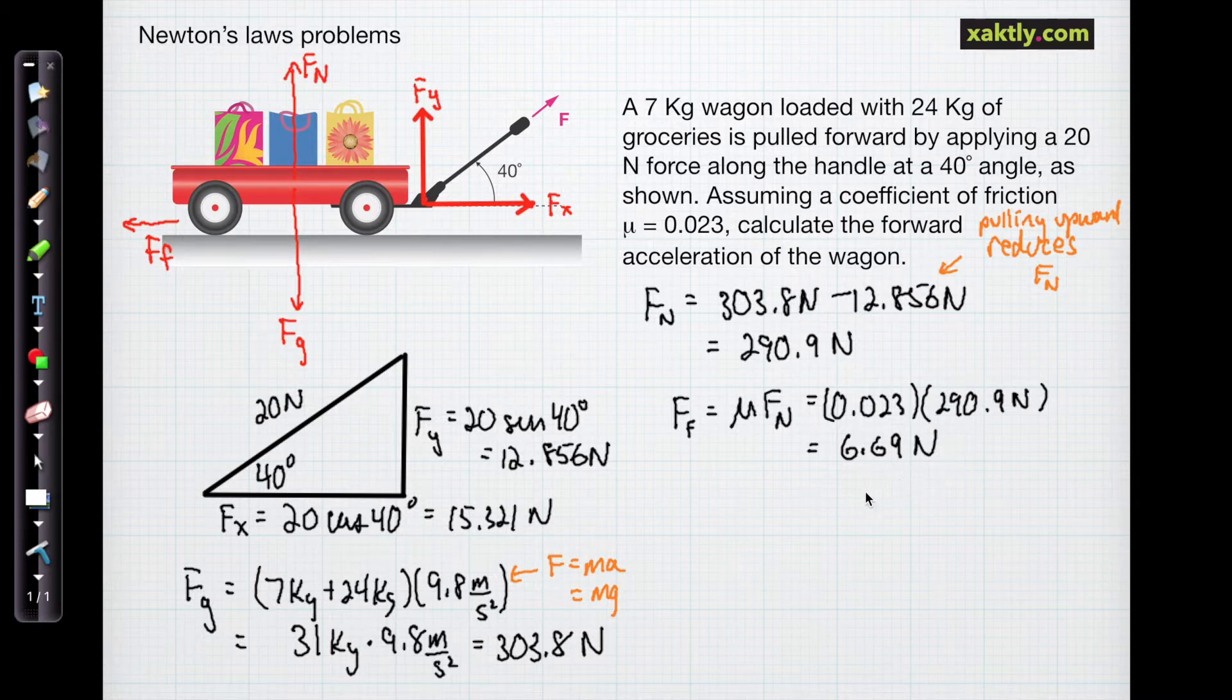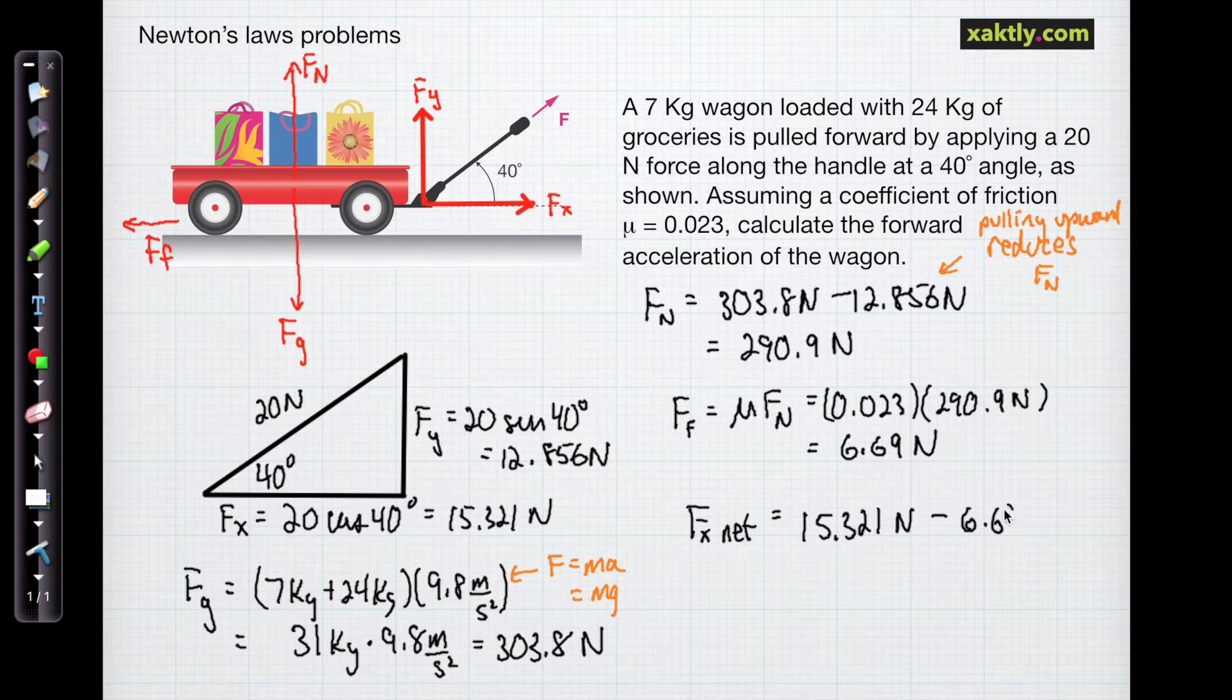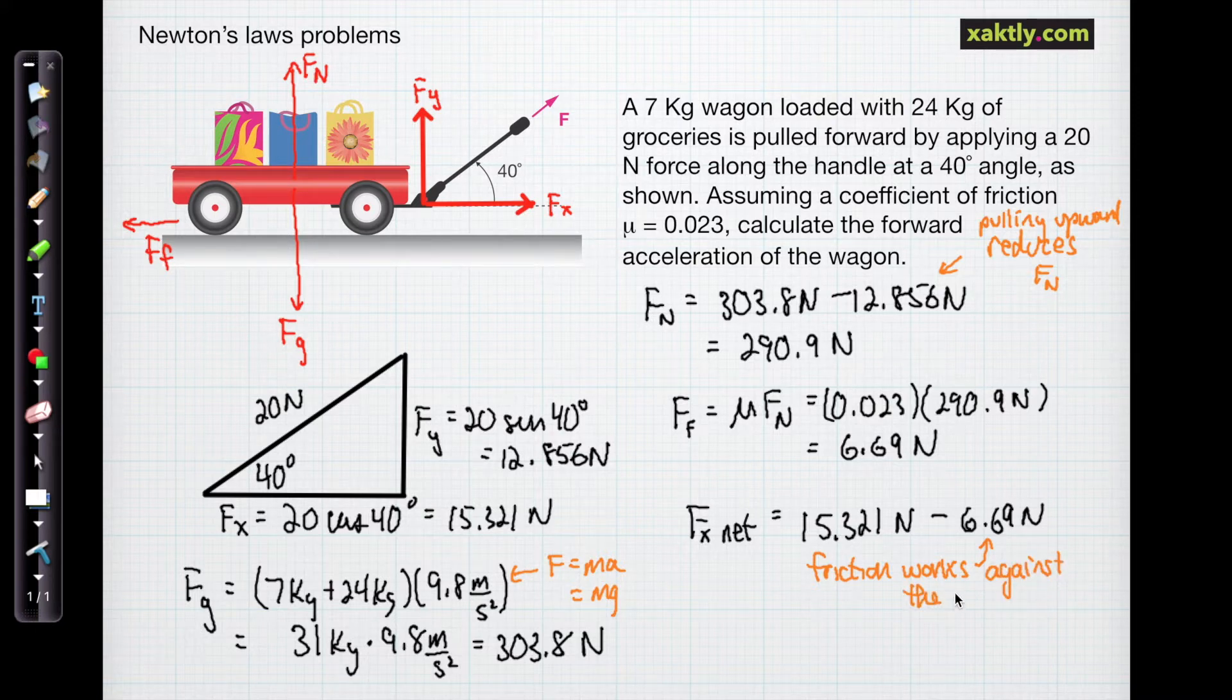That opposes f of x, so that'll have to be subtracted from f sub x. The net force in the forward direction is our 15.321 newtons, one of the first calculations we did, minus the 6.69 newtons. Remember that friction always works against the motion, so you're always going to be subtracting a frictional force from a force in the direction of motion.